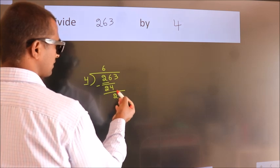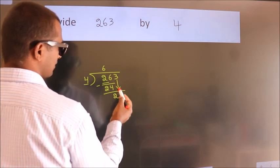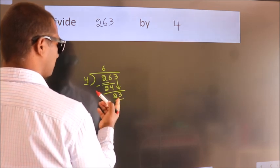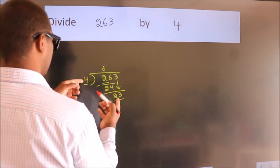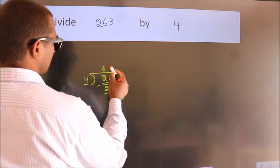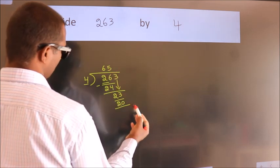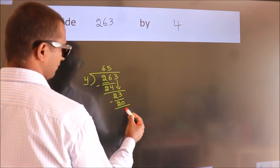After this, bring down the beside number. So 3 down, giving us 23. A number close to 23 in the 4 times table is 4 times 5 equals 20. Now we subtract. We get 3.